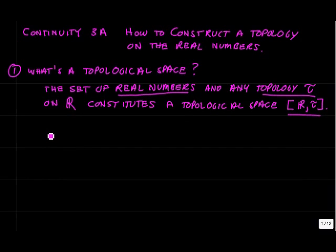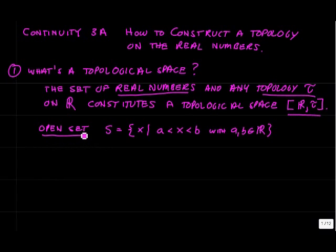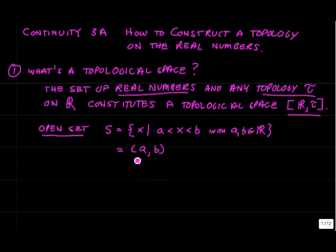The elements of a topology of the real numbers are open sets of real numbers and their unions and intersections. On the real numbers, an example of an open set is the open interval of all numbers between two numbers A and B, excluding the endpoints. A topology on the real numbers consists of sets of this kind for various A's and B's, and unions and intersections of such sets.